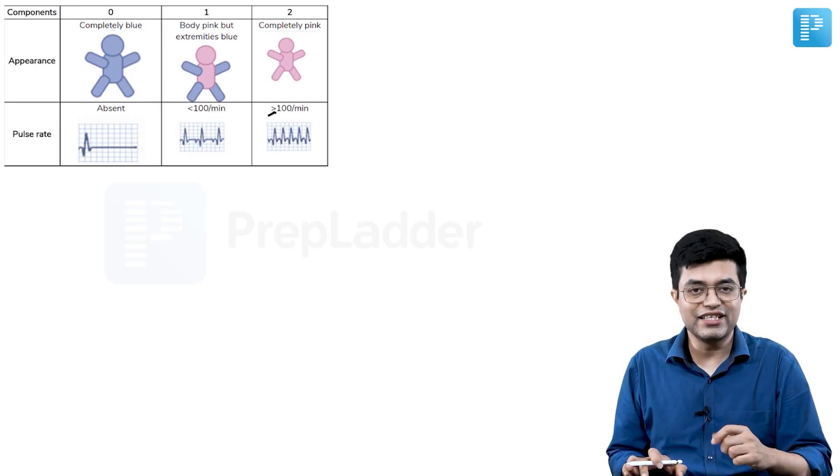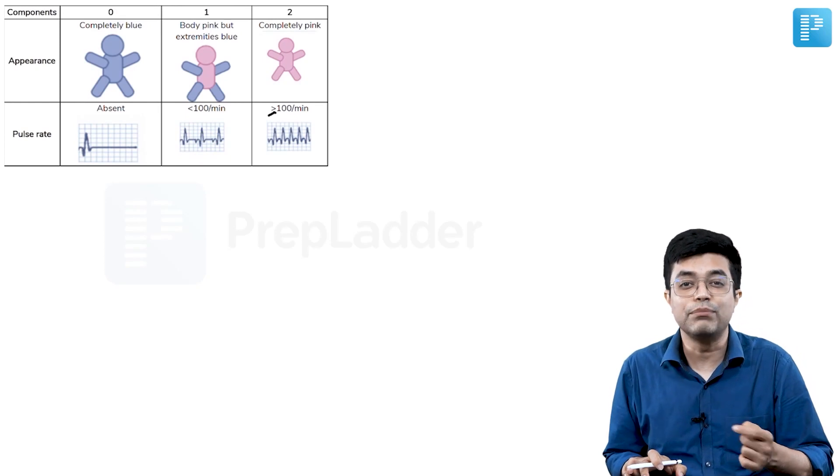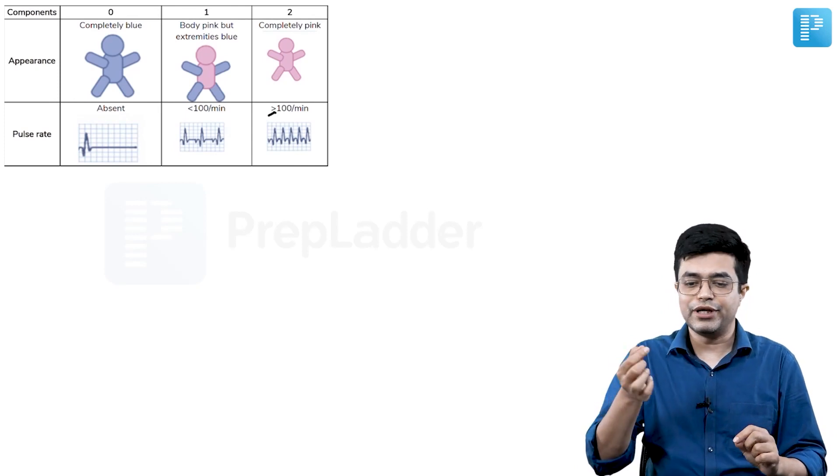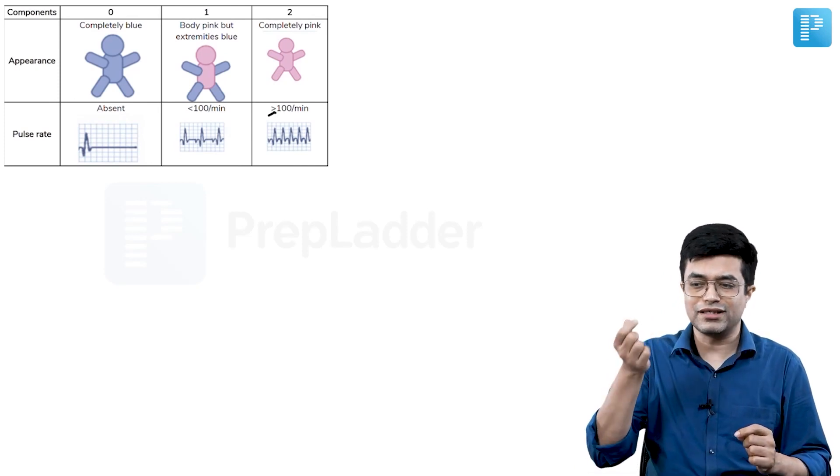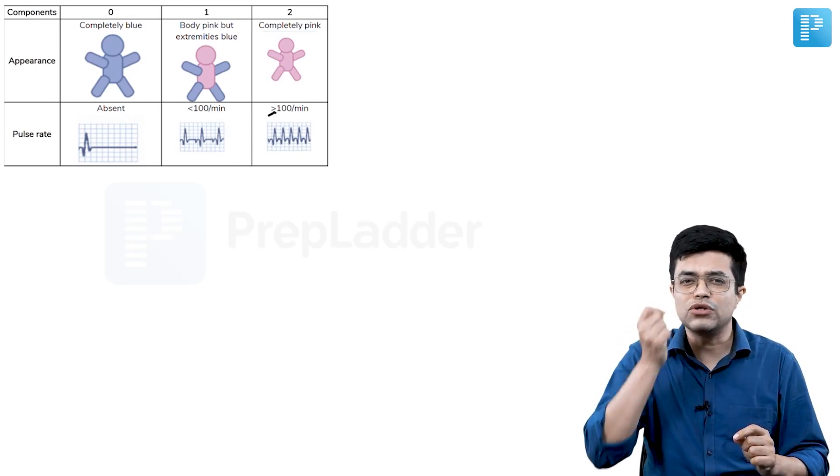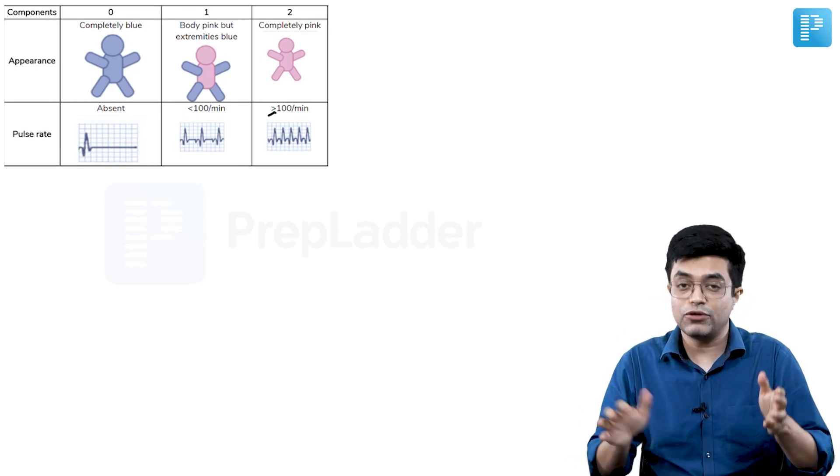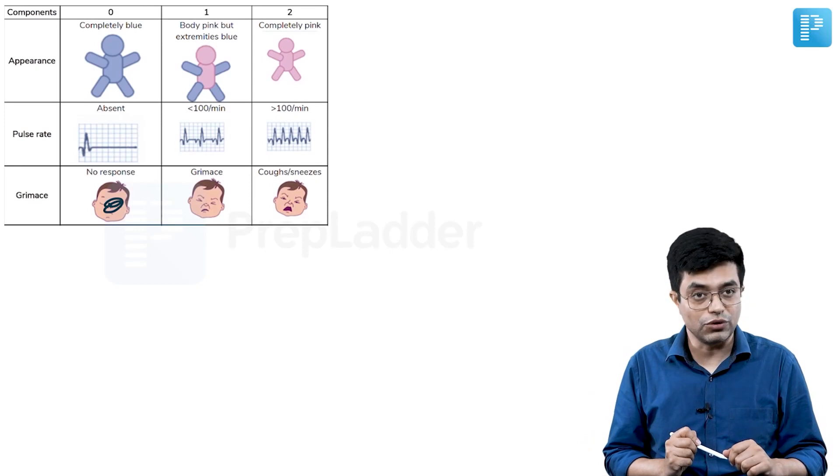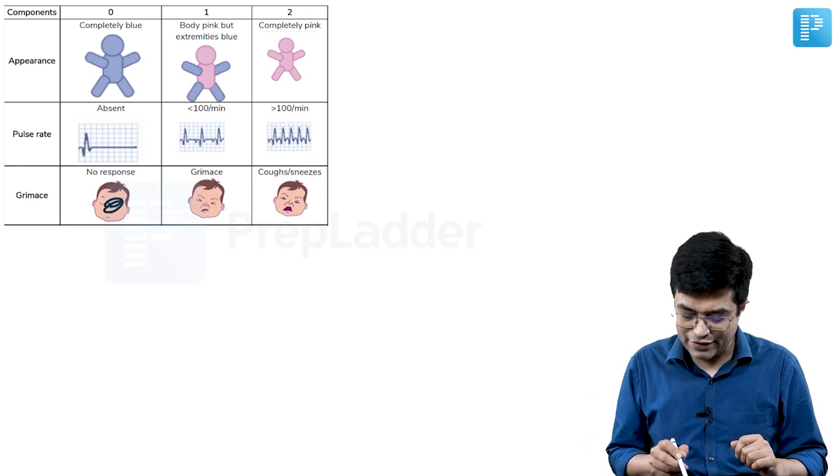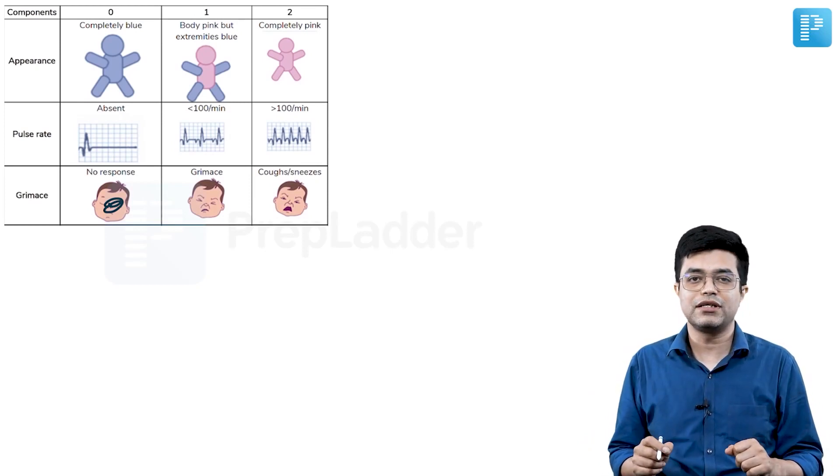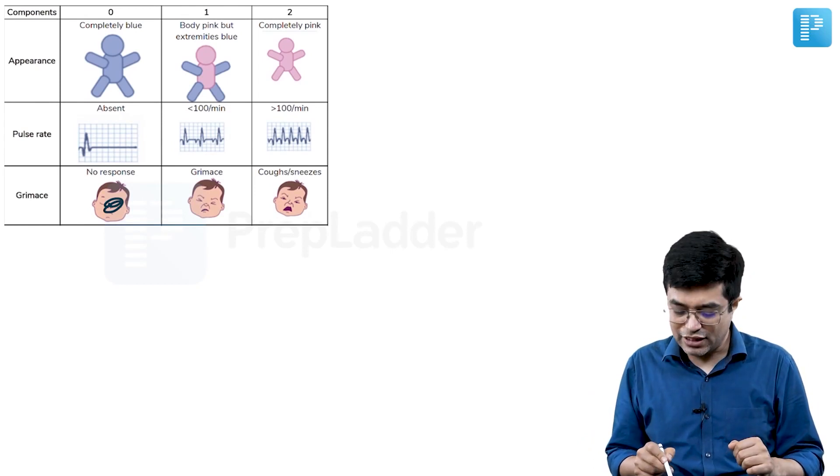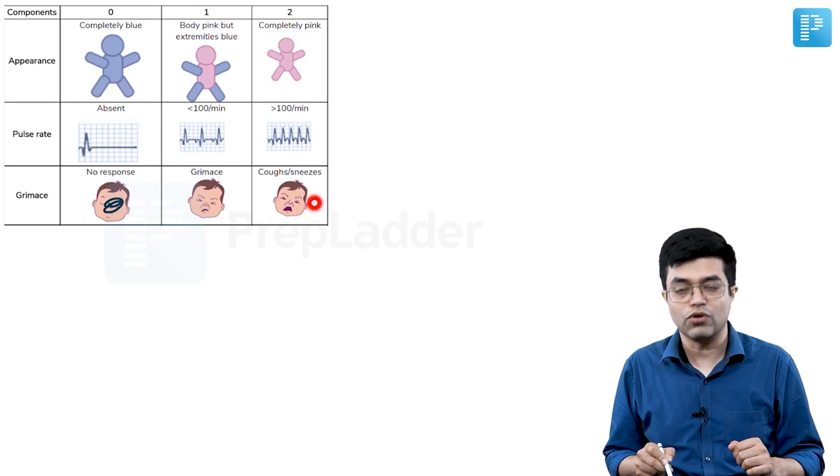The third component is G. G stands for grimace. What is grimace? Grimace is basically reflex irritability. How do you check for grimace? You take a wisp of cotton or more commonly a sterile feeding tube and irritate the nostril of the child and you see the response of the child. So on grimacing, if there is no response, you give a score of 0. If you find that the child is having a grimacing response, grimacing response is making a face like this, that is grimace. If the child coughs or sneezes, that is a score of 2.